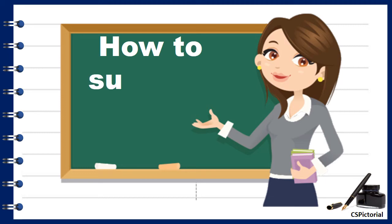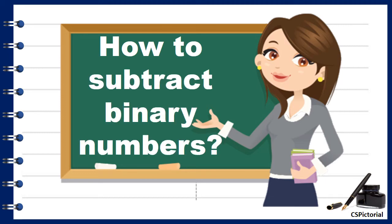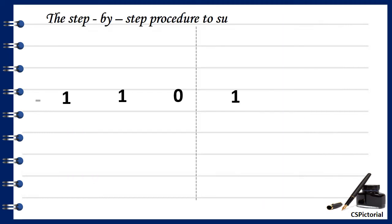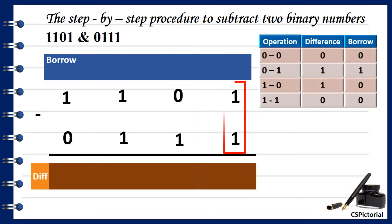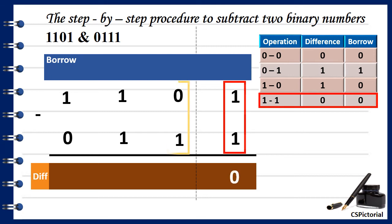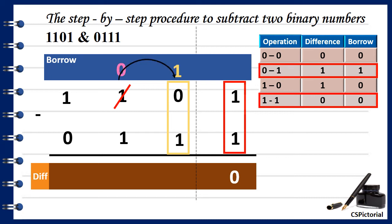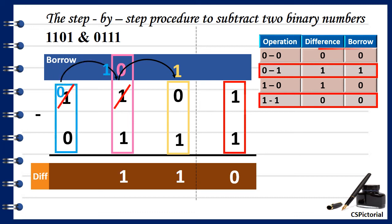Now we will find how to subtract binary numbers. Let us try to subtract these two binary numbers. The subtraction is also done from right to left. Apply the rules of subtraction at each step: 1 minus 1 is 0; next, 0 minus 1 is 1 with a borrow; next is also 0 minus 1, so again a borrow; finally 0 minus 0 is 0. So 101101 minus 0111 is 0110.